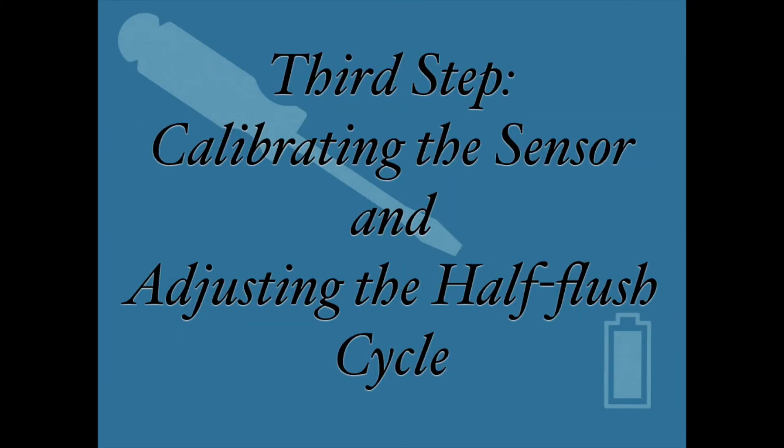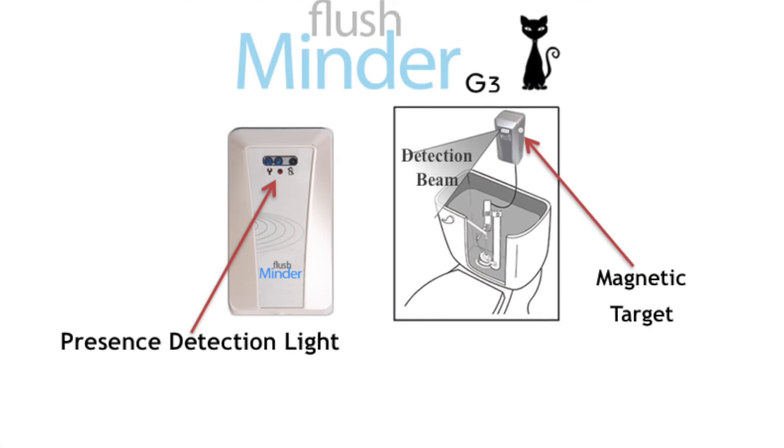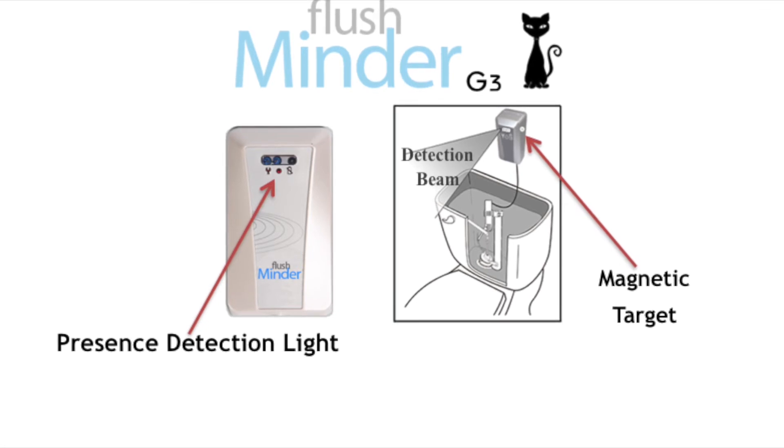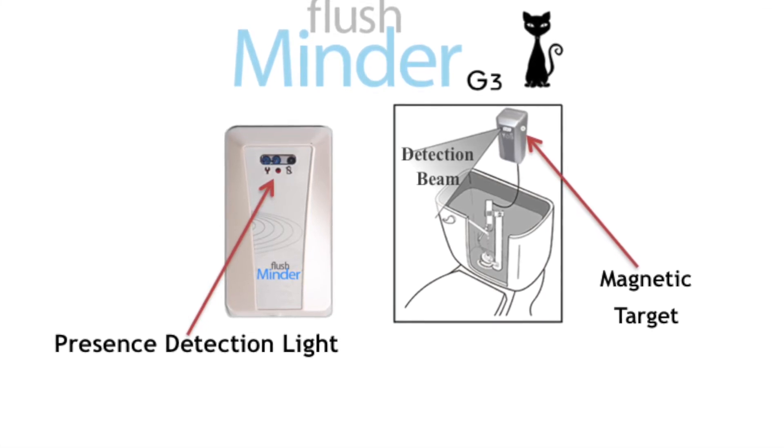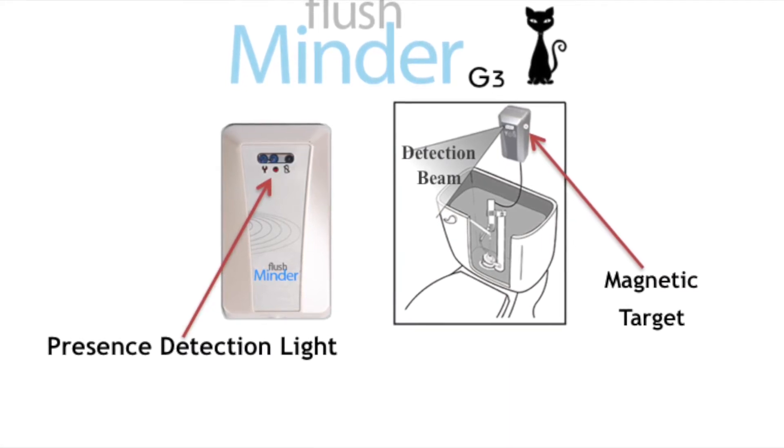In this final step of calibrating the sensor and adjusting the half-flush cycle, you will need a Phillips head screwdriver as well as the batteries and magnetic wand included in your kit. Remove the sensor from the mounting plate on the wall. Using a Phillips head screwdriver, unscrew the battery cover from the sensor.